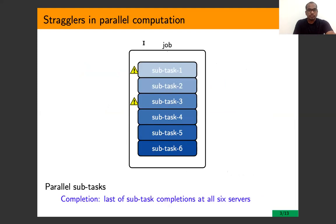Distributed computing uses multiple distributed servers to process a job, where a job is divided into sub-tasks and launched each on a single server. The execution time of a task on a machine has stochastic variations due to many contributing factors such as co-hosting, virtualization, hardware and network variations. Considering this randomization, we assume that the service completion times at each server is a random variable and are IID in nature.